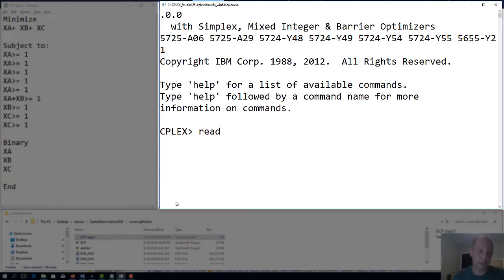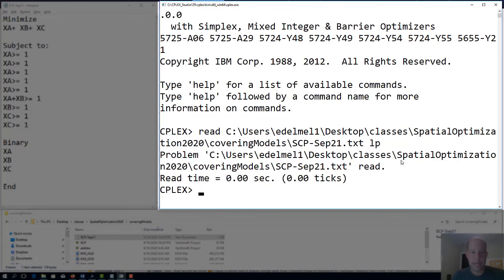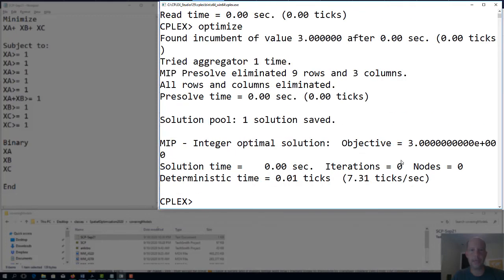I have opened CPLEX. I read the text file here. I write down the entire path and I write LP because it's a linear programming file. Then I optimize it, and it will tell me that there is one solution saved. The objective is equal to three.